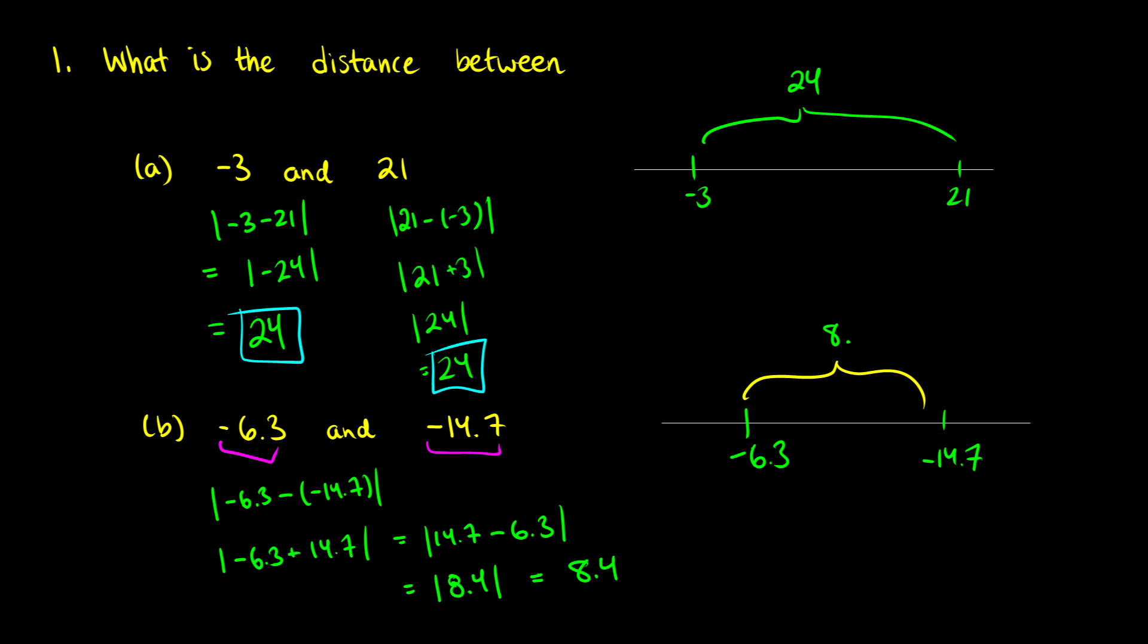So the distance between negative 6.3 and negative 14.7 is just going to be 8.4 units. If we were to actually just keep this order the same, negative 6.3 plus 14.7, we're going to get the same thing. If we were to reverse the order that we subtract the numbers, we would get an absolute value of negative 8.4, and our final result would still be 8.4.